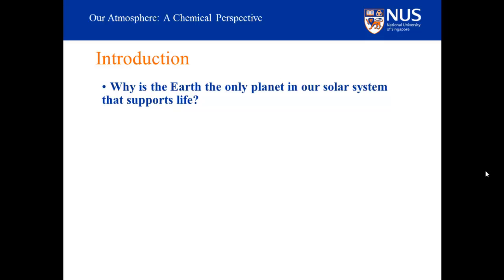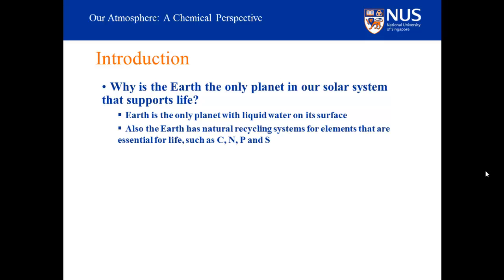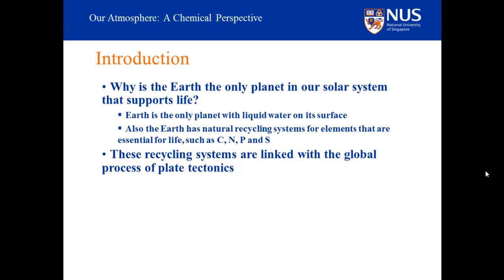Why is Earth the only planet in our solar system that supports life? The direct answer is that Earth is the only planet that has liquid water at its surface. But part of the reason Earth is able to maintain liquid water is that our planet has natural recycling systems for the elements essential for life, including carbon, nitrogen, phosphorus, and sulfur. These recycling systems are ultimately linked with the global process of plate tectonics. The link between tectonic activity and the carbon cycle is important to the regulation of atmospheric carbon dioxide concentrations, and thus to climate as well.